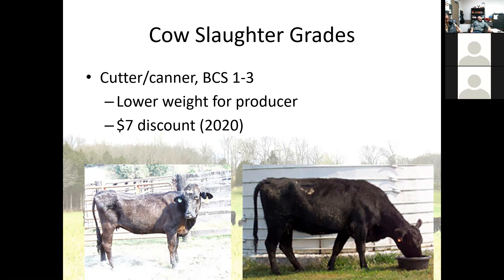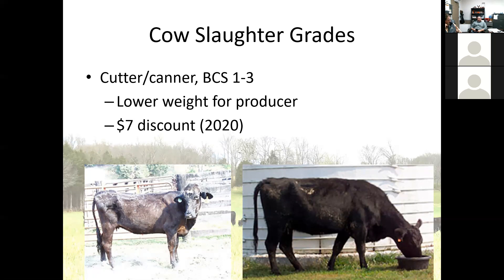From a fall-calving herd standpoint, a lot of cows get drawn down during the winter with calves weaned in April or May. That cow may still be pretty thin, but we generally have a lot of grass that time of year. Over the next 30 to 40 days she can eat good spring grass and put condition back on. If she's been identified as a cull — or turns out to be open on pregnancy evaluation — you wean the calf and sell the cow after putting just a little condition back on her, which actually hits the top of the slaughter cow market.